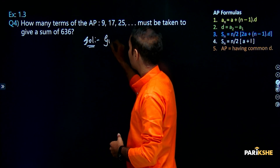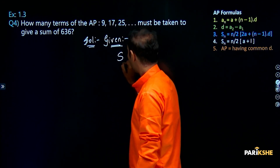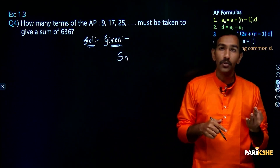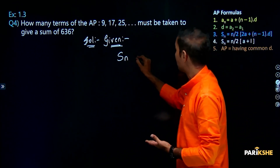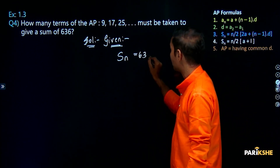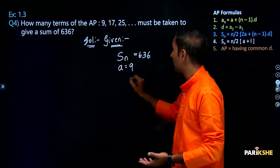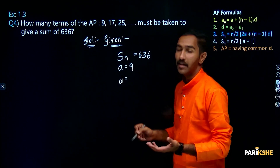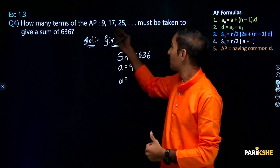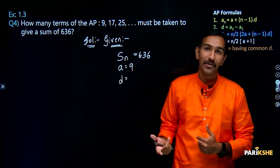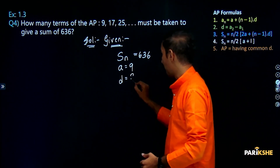What is given? Sum of n terms is given. The sum of the first n terms is given as 636. Also, the first term a is equal to 9. We need d — the common difference. Using the formula a2 minus a1: a2 is 17, a1 is 9, so 17 minus 9 gives d is equal to 8.